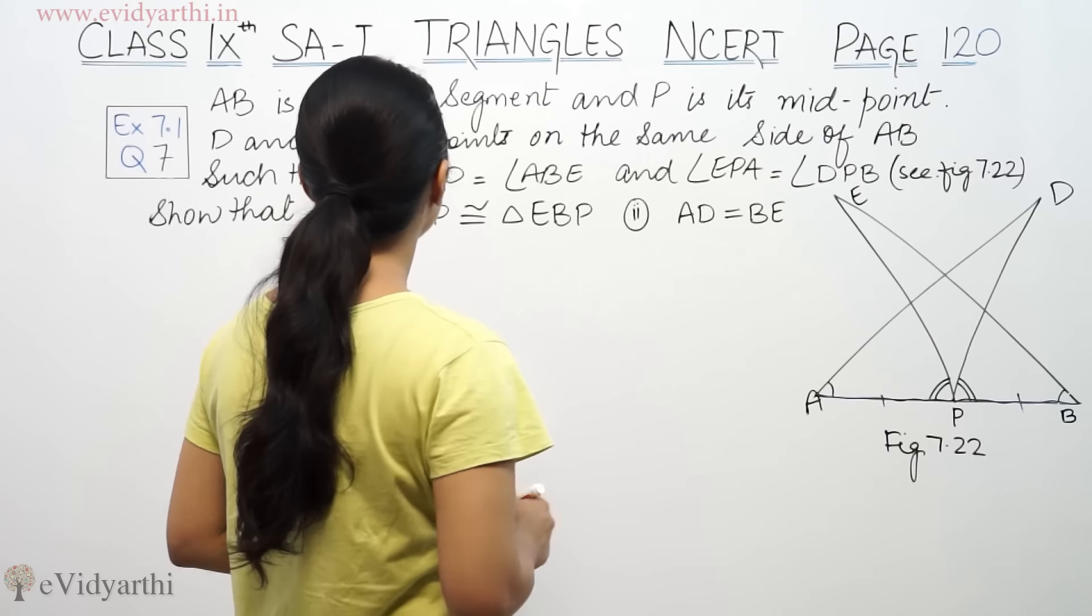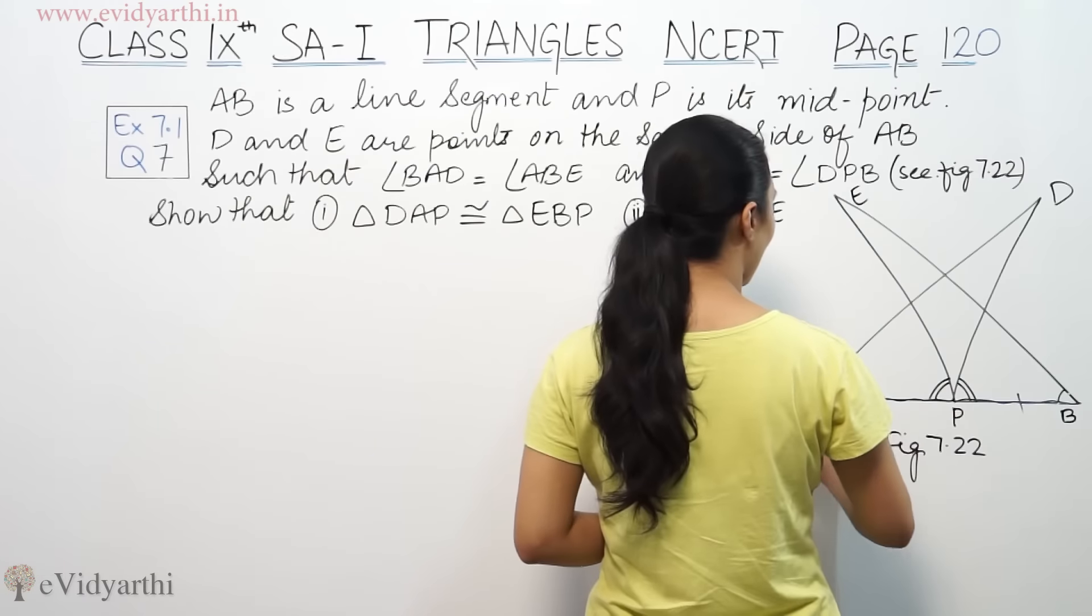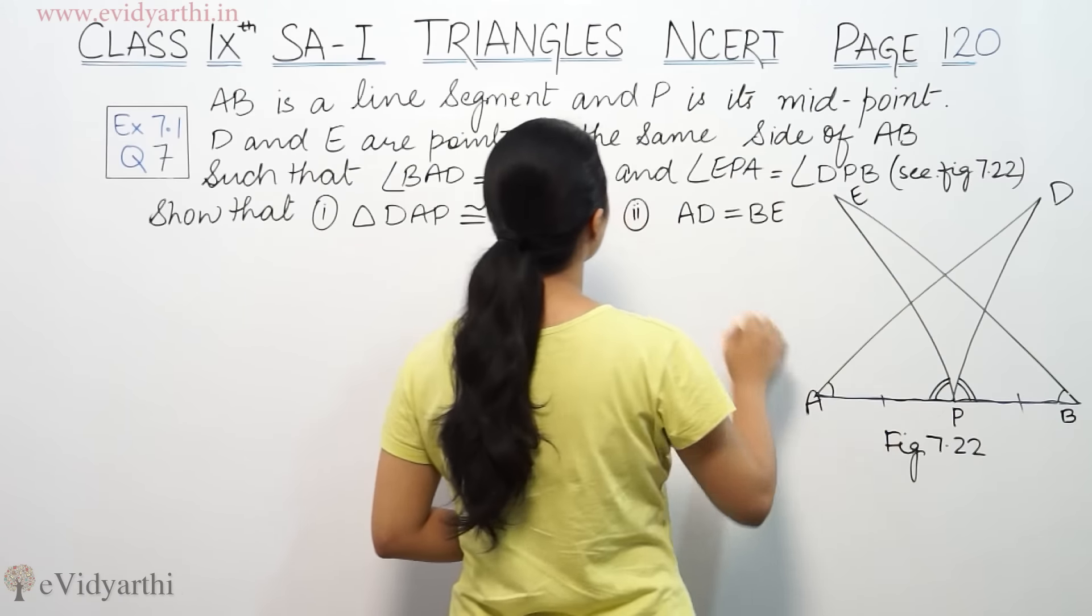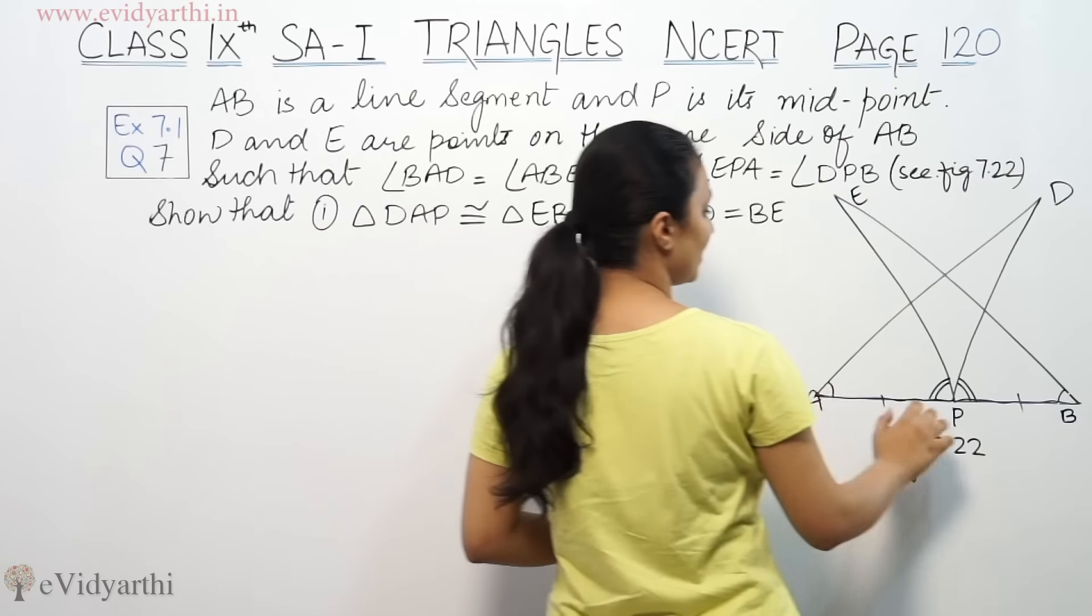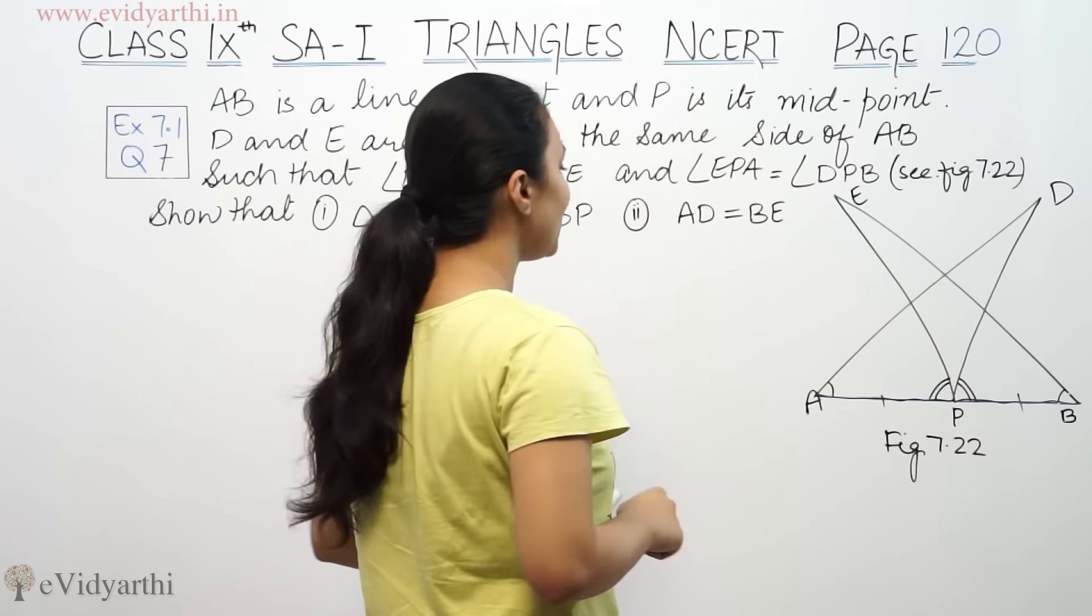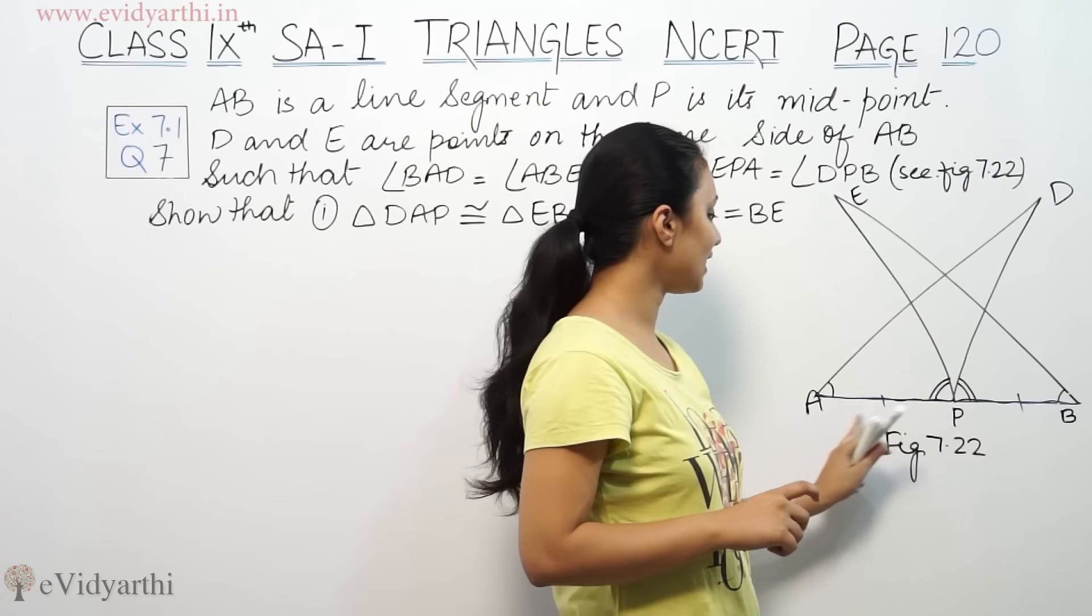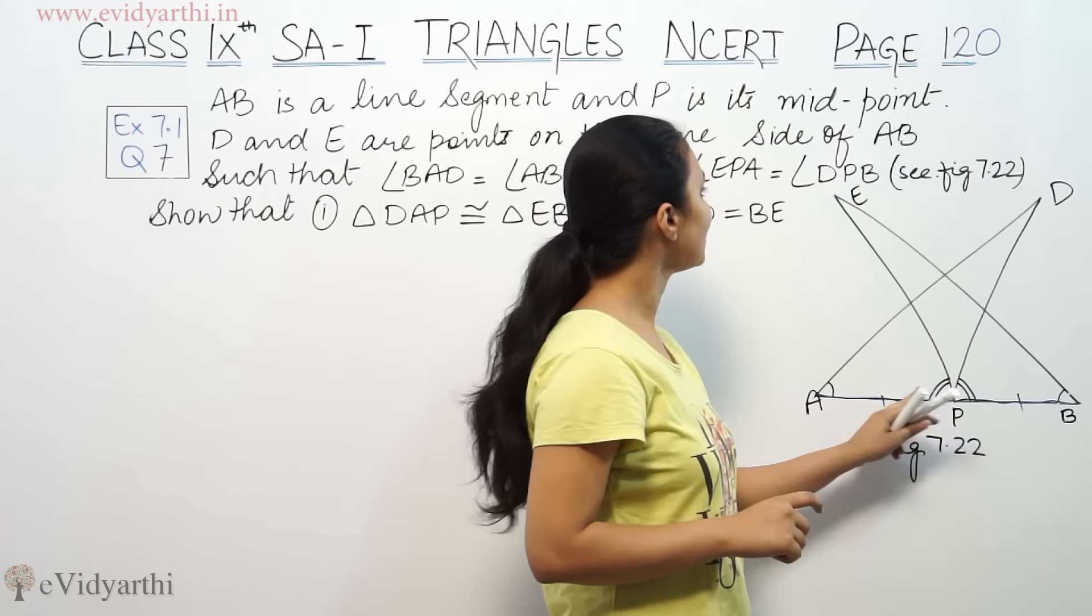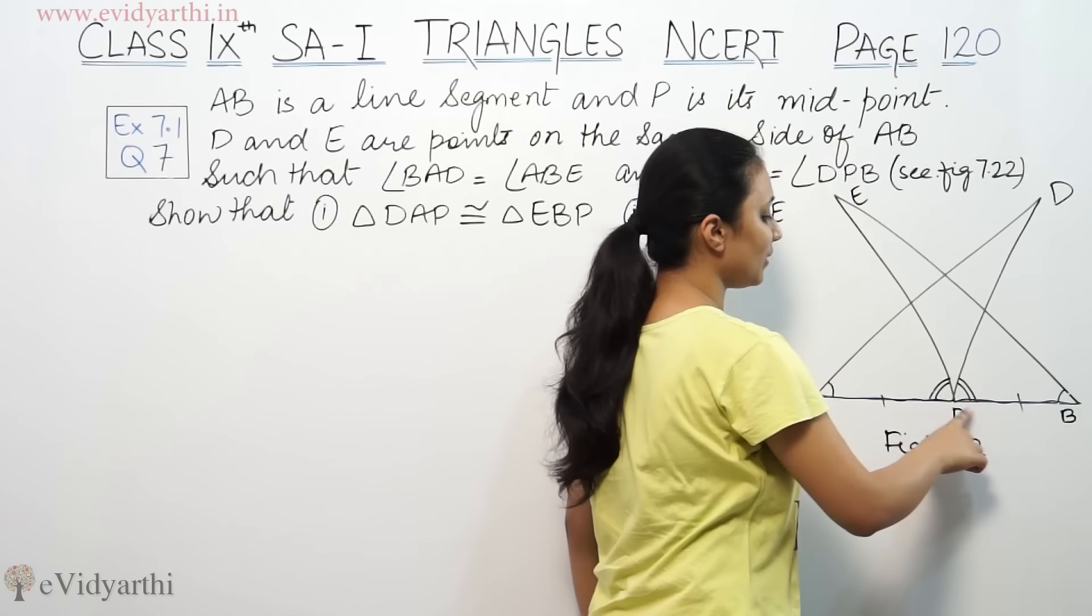Such that angle BAD is equal to angle ABE, and angle EPA is equal to angle BPB.